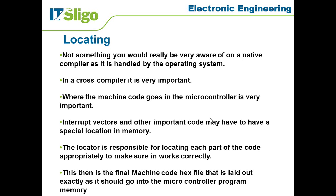Finally, locating, which is the third part of this. This is not something you would really have been aware of on the native compiler such as the dev C compiler, as that's generally handled by the operating system when the executable runs. In a cross-compiler, however, it is very important. Where the machine code generated in the hex file actually goes in the microcontroller — in other words, where it's placed — is very important. Things like interrupt vectors often have to be placed at a very specific address, and there are sometimes parts of memory being used by some other system that you have to avoid. So it's vitally important that you tell the system where you want to put your code. The locator is responsible for locating each part of the code appropriately to make sure it works correctly.